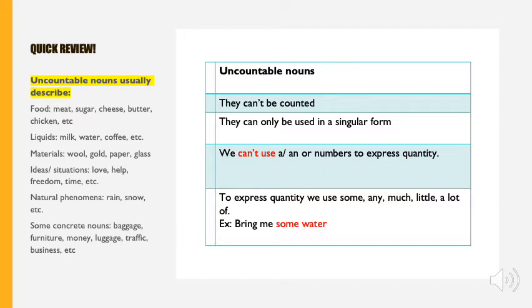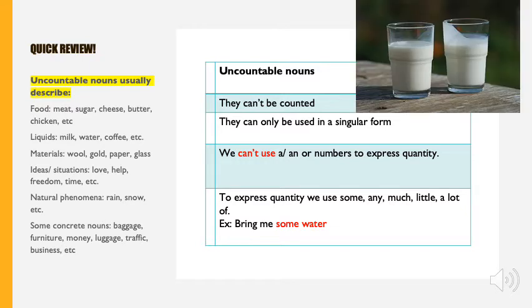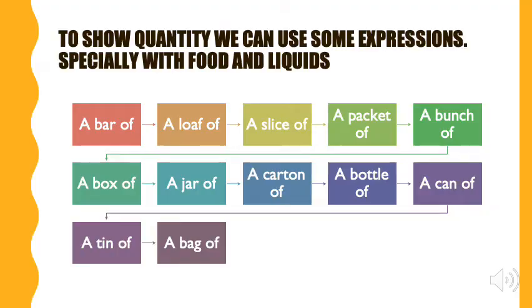What does that mean? That means that we cannot say I have one baggage or two baggages, or one furniture or two furnitures. What we do is that we group them into expressions. Same with liquids. We cannot say one milk, two milks. We can say one glass of milk, two glasses of milk. And those are the expressions that we're going to use related to food and liquids. We're going to go one by one.